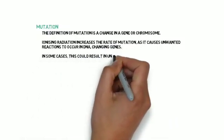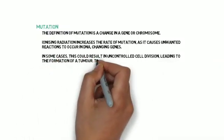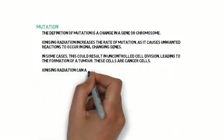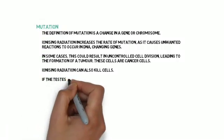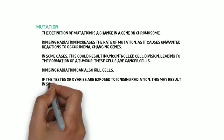In some cases, this could result in uncontrolled cell division, leading to the formation of a tumour. These cells are cancer cells. Ionizing radiation can also kill cells.